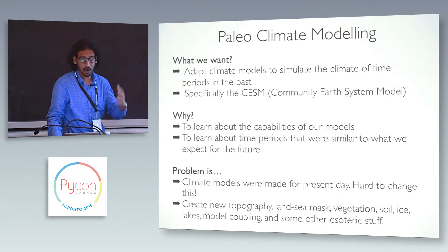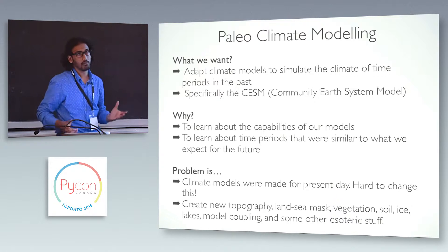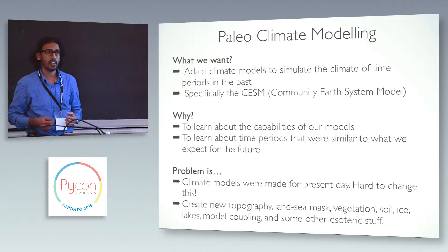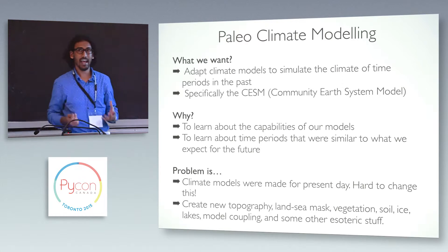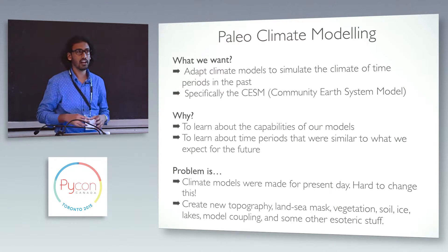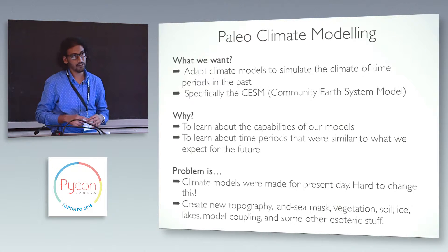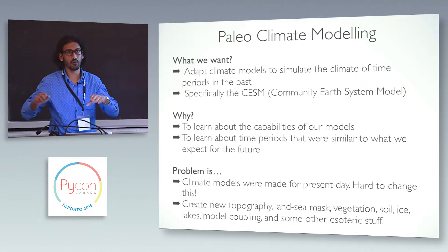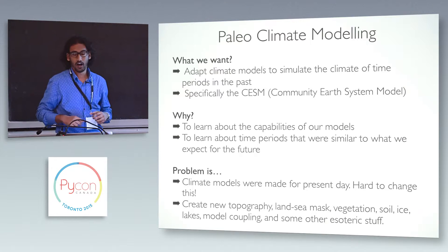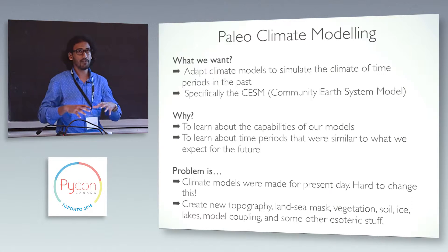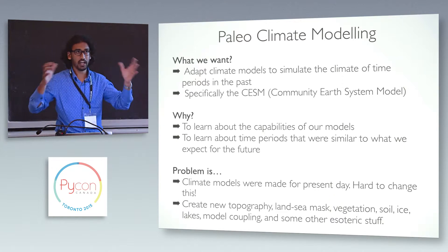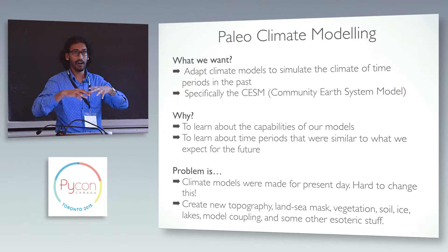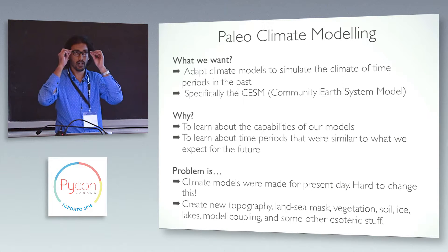We can understand those periods and inform ourselves about the future. The problem is that when the climate models were written, they were written for present day. So if you want to change anything, you have to go and change a lot of things by hand. Specifically, you have a different topography, a different distribution of land and water, and different vegetation. You have this gridded data that has varied quite a bit depending on what time period you're in, and changing that is a very manual-intensive process.